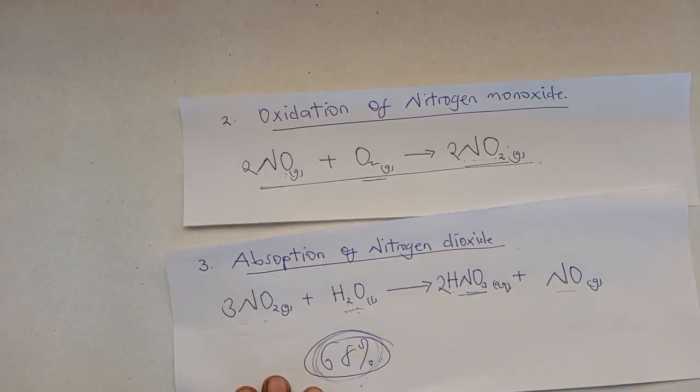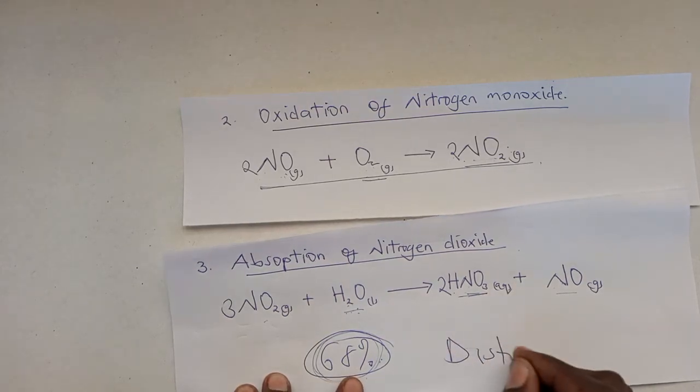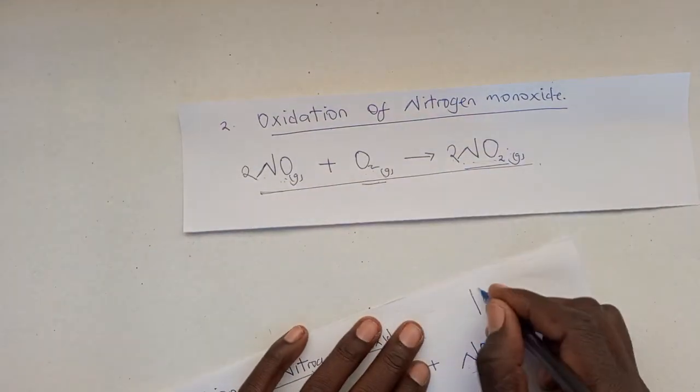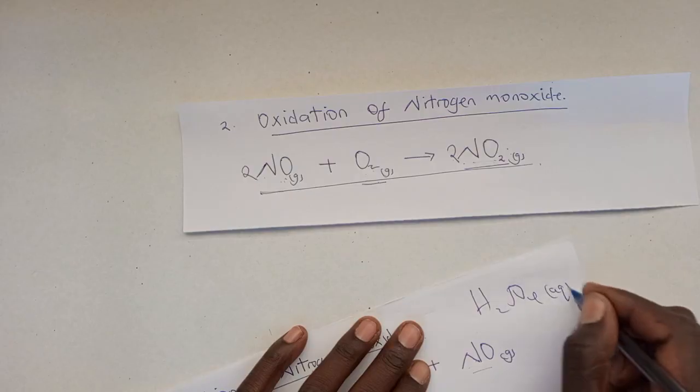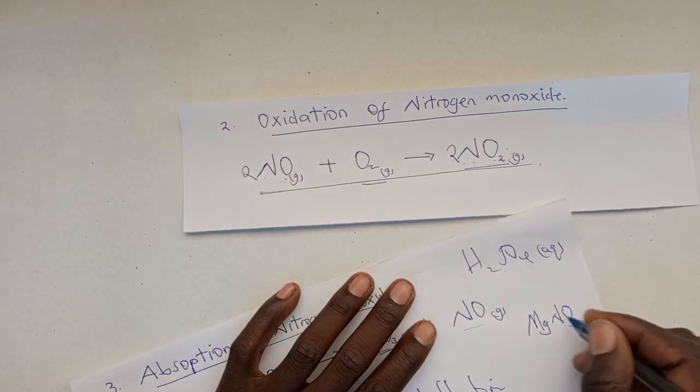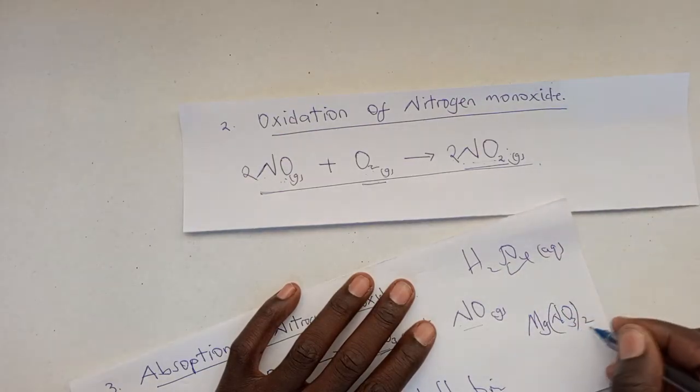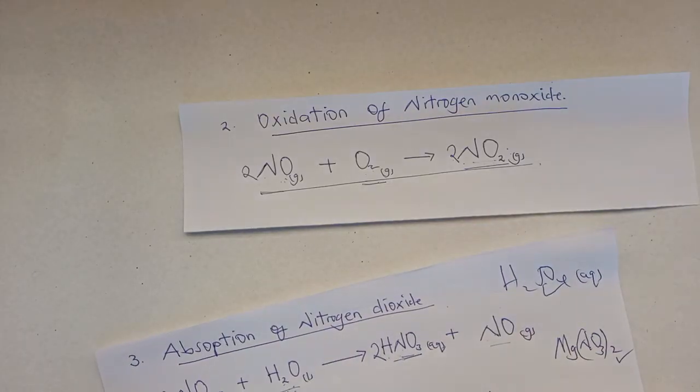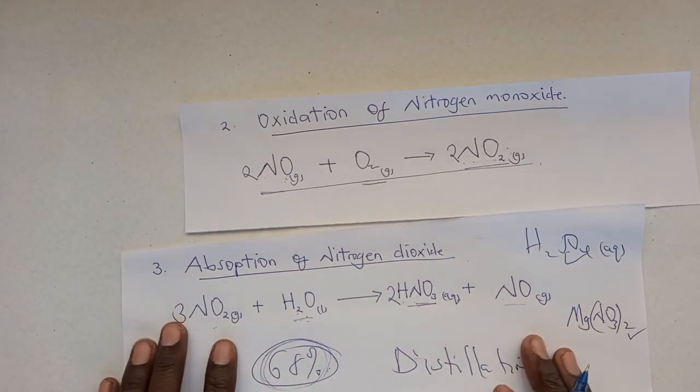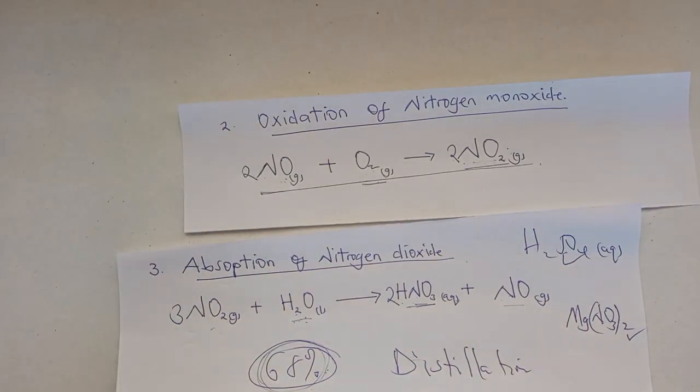How can you further purify this? You can use the process of distillation using either sulfuric acid or magnesium nitrate. These two are good dehydrating agents which can help us purify nitric acid further beyond 68%. I hope this video was helpful.